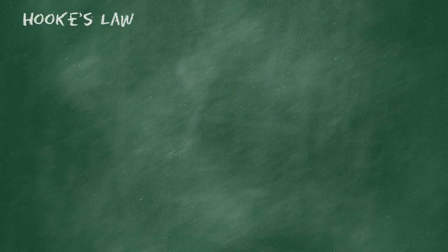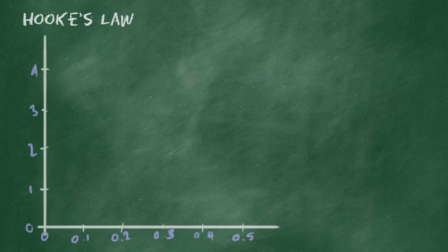Hooke's law is an expression of how if you add force to an object you change its shape. You need to be able to show that on a graph and you need to be able to do some calculations based on that. So this is what we call a force extension graph. Force on the y-axis in newtons and extension on the x-axis in metres.